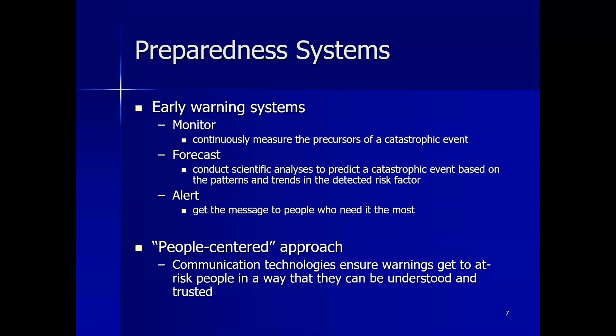Moving on to the people-centered approach: communication technologies ensure warnings get to at-risk people in a way that they can be understood and trusted, and that appropriate actions are taken in response. Information and education centers where people can learn about risks they face are one way to keep all people informed. All types of broadcasting media are also potential technologies for disseminating information that at-risk communities need to be prepared for an emergency.